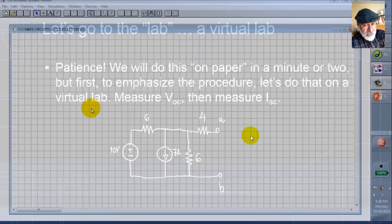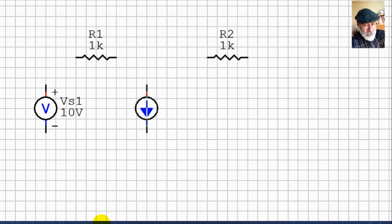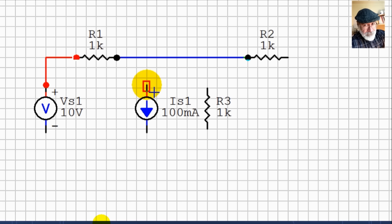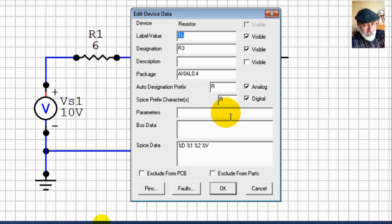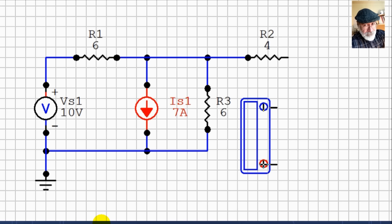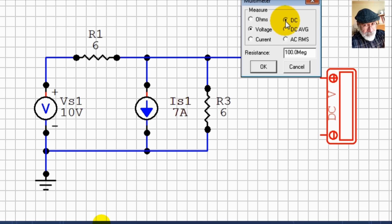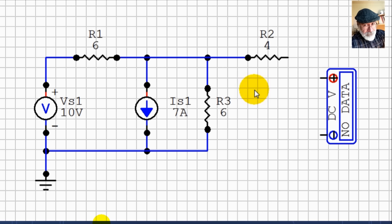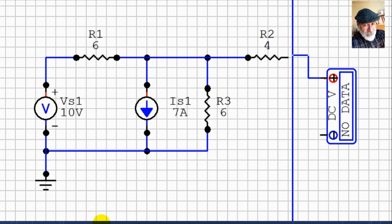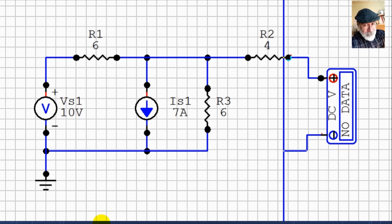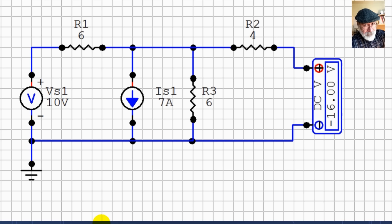Let's wire the circuit with the source, resistors, the current source, and the vertical resistor. We need a reference node. The values are adjusted: 10 volts, 6 ohms, 6 ohms, 4 ohms, and 7 amps. The multimeter is set to volts DC with 100 megaohms internal resistance — not ideal, but pretty good. We connect it to the port to measure the open circuit voltage. Running the simulation gives negative 16 volts for VOC, which is also V_TH.